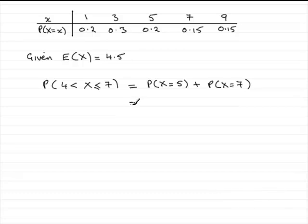Put those values in. Probability X equals 5 is 0.2 plus probability X equals 7 which is 0.15. Add those two together and you've got 0.35.